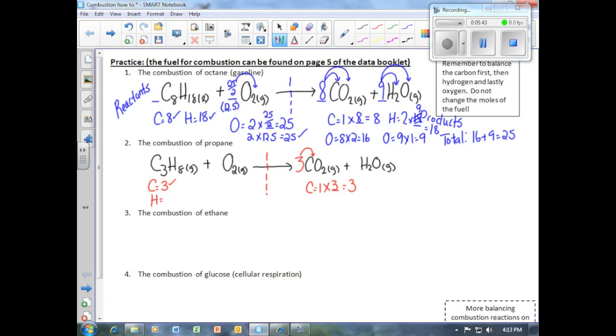Next, we move on to hydrogen. Propane gives us eight atoms of hydrogen, and on the product side, water gives us two. Since those aren't balanced, we need to multiply two by something in order to get eight. Therefore, the coefficient in front of water will be four, because four times two is eight.